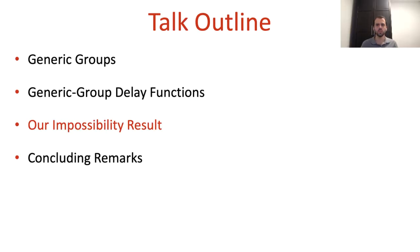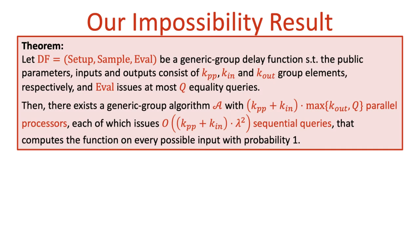We can now move on to present our attack against any generic group delay function in groups of known order. I should stress that this is a simplified version of the attack, but it captures the gist of it. So, with the definition of generic group delay functions in mind, our result is the following. Let df be a delay function such that the public parameters include k_pp group elements, the input includes k_in group elements, and the output includes k_out group elements, and let q be the number of equality queries issued by the evaluation algorithm eval.